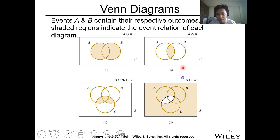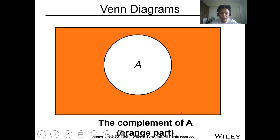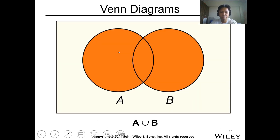This is a complement, meaning we're referring to the elements present outside the event — outside that value. The orange region represents the sample space outside event A. In a larger Venn diagram with two events, the complement of A is shown in orange, while event A is the circle itself.